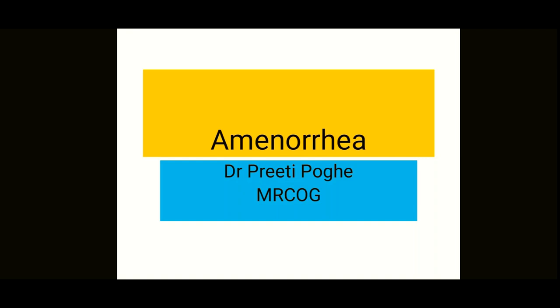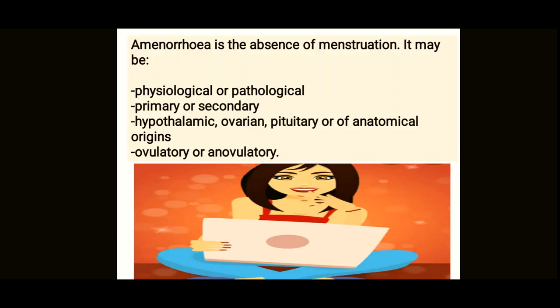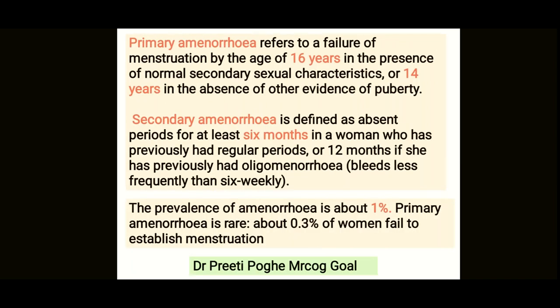This video is on the topic of amenorrhea, which is the absence of menstruation. It may be because of physiological or pathological causes. It can be either primary or secondary, and can be of hypothalamic, ovarian, pituitary, or anatomical origins — either ovulatory or anovulatory.